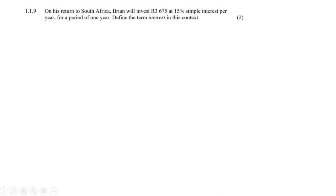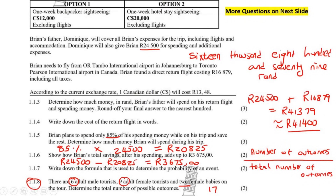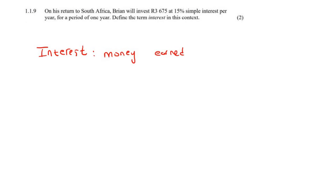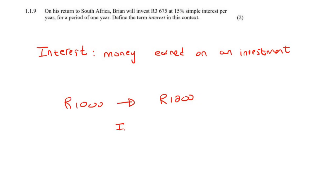On his return to South Africa, Brian will invest his 3,675 Rand savings at 15% simple interest per year for a period of one year. The question doesn't ask him to calculate it — it asks: define the term 'interest'. Interest is the money that you earn when you invest. For example, if you invest 1,000 Rand and after one year it's worth 1,200 Rand, then the interest — the amount you earned — is 200 Rand.